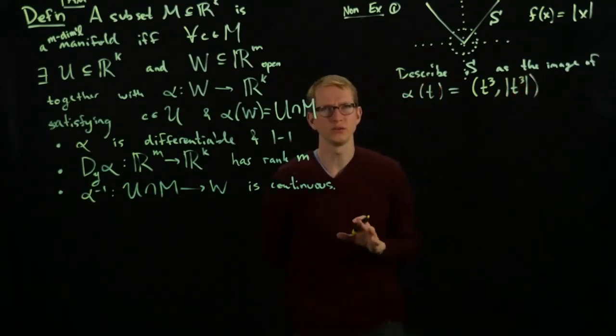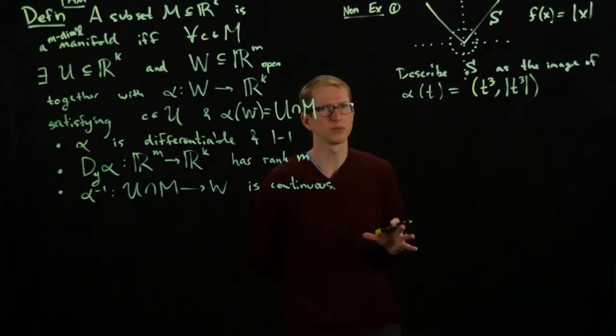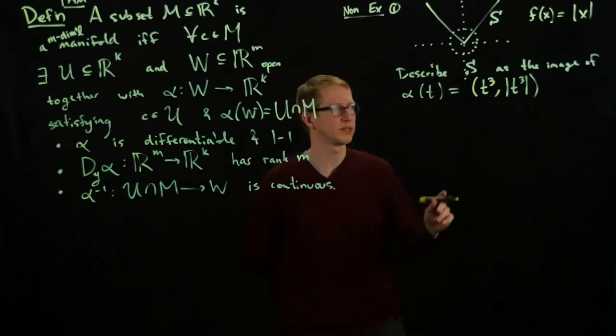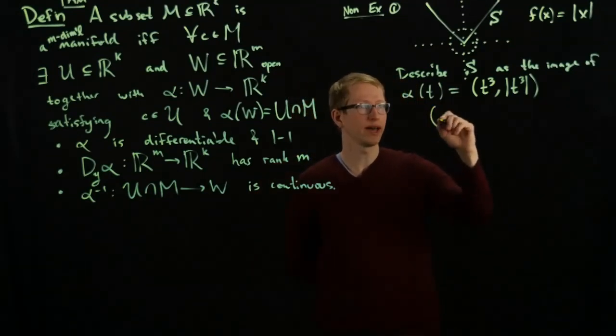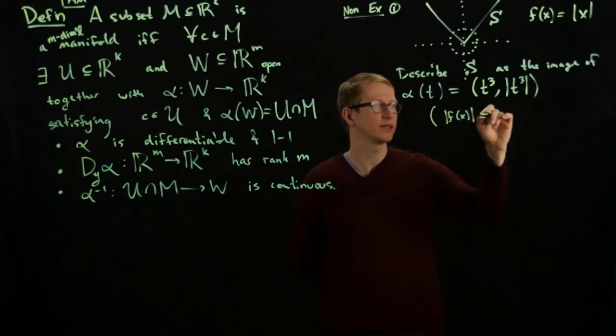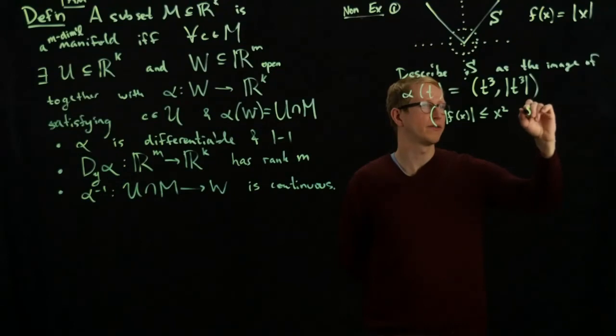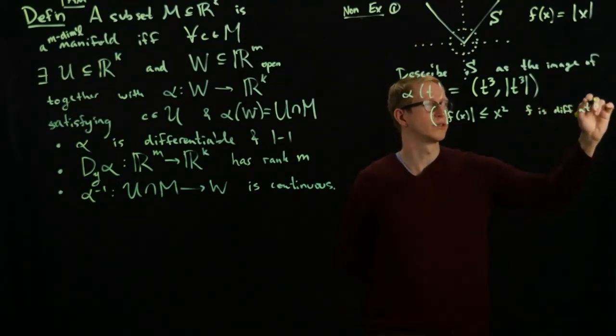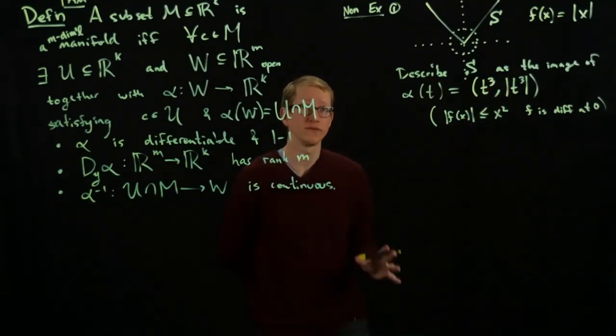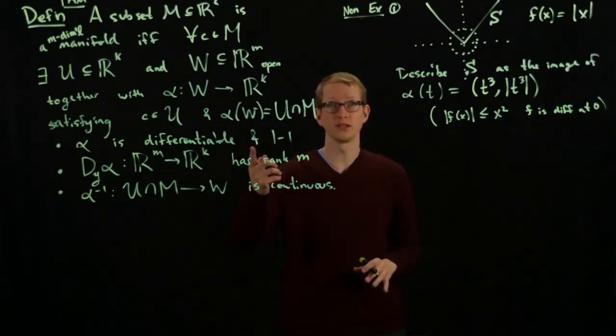For instance, I can also rewrite this, describe this subset - let's call this, since it's not a manifold, let's call it S or something. Describe S as the image of the following function. Let's try this: (t, t cubed, and the absolute value of t cubed). You might think this function doesn't look differentiable because of the absolute value sign, but that wouldn't quite be a correct assessment because we know that if we recall a fact that says if we have any function f(x) that satisfies the condition that its absolute value is less than or equal to x squared, then f is differentiable at 0. So we might think that maybe this function is not differentiable at 0, but that's actually false. It is differentiable, so it satisfies this condition.